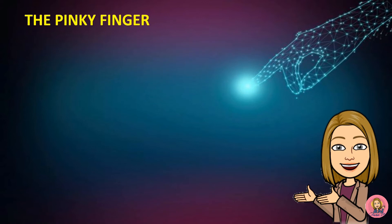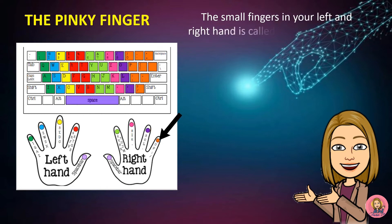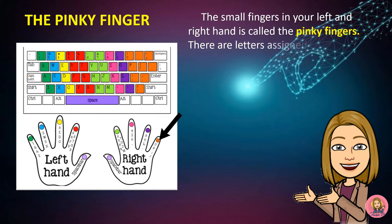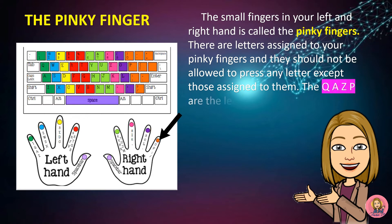The pinkie finger: the small fingers on your left and right hand are called the pinkie fingers. There are letters assigned to the pinkie fingers, and they should not be allowed to press any letter except those assigned to them.